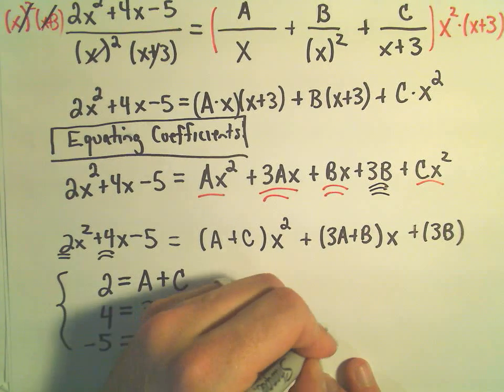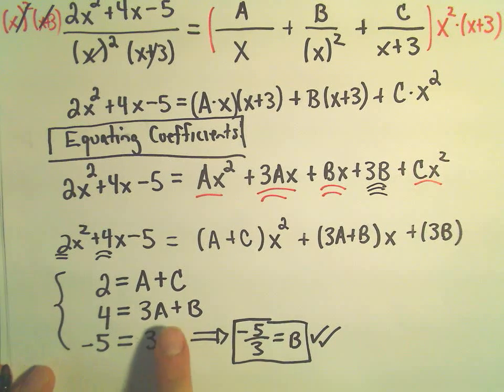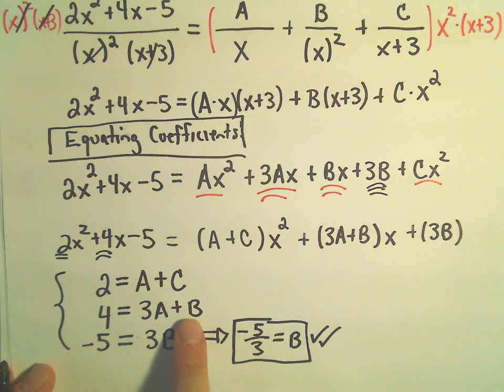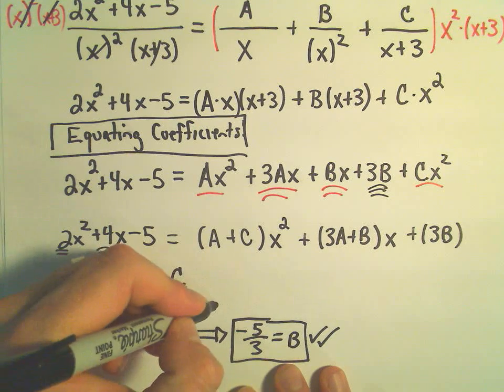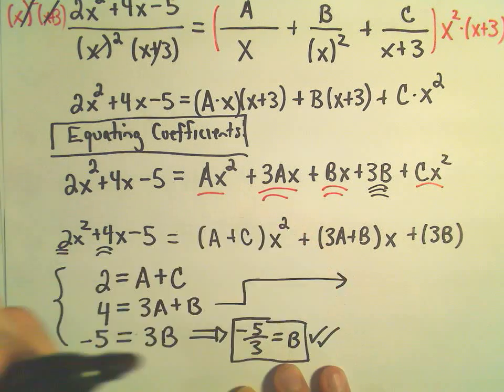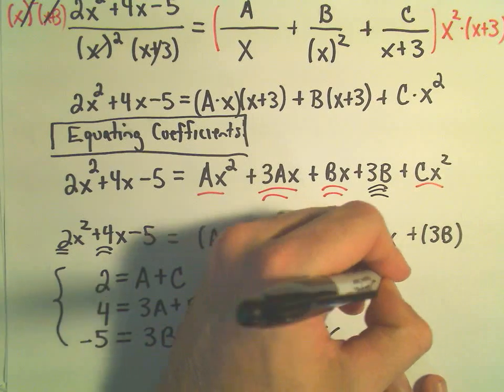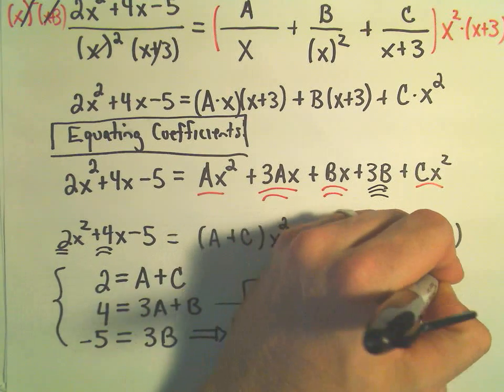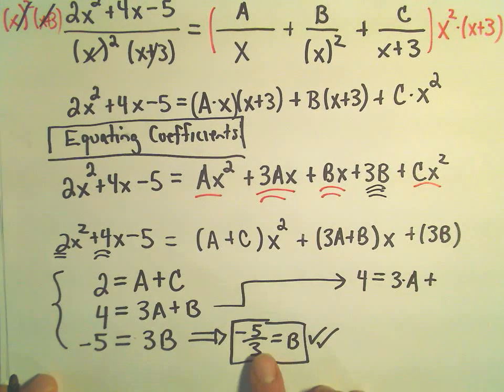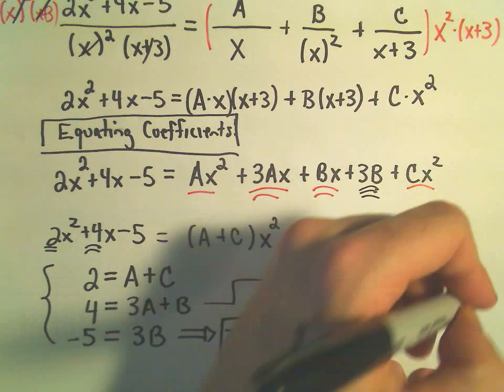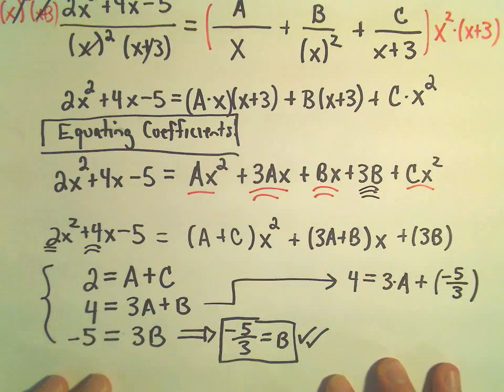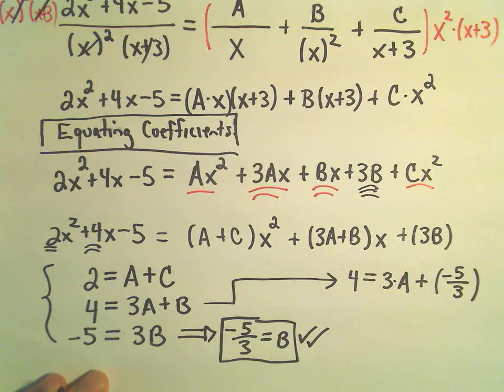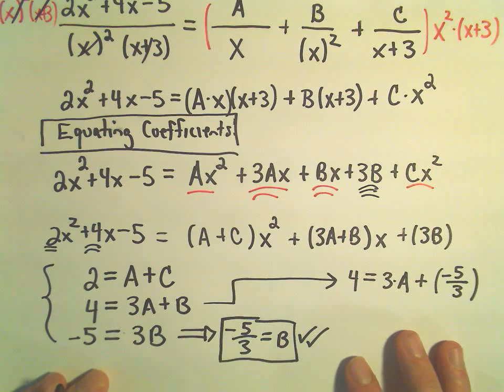So I say, hey, that's great because notice the second equation involves A and B. So I'm going to take my 4 equals 3A plus B. I'm going to take that equation. So we had 4 equals 3A plus B. But we know what B is. We know it's negative 5 thirds.